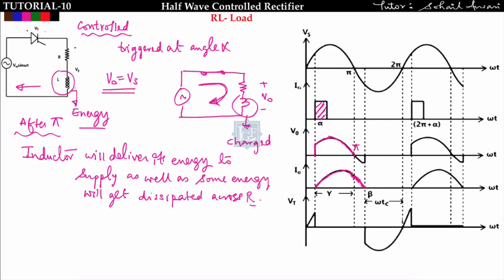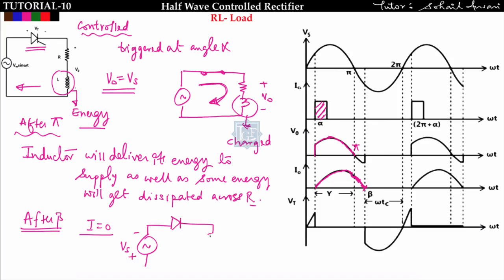The inductor discharges and the thyristor conducts after pi up to an angle beta, at which the current becomes zero. The moment the current becomes zero, the thyristor goes into reverse blocking mode because at beta the supply voltage is negative. Applying KVL, the voltage drop across the thyristor equals the supply voltage, which is negative after beta, so it enters reverse blocking mode.